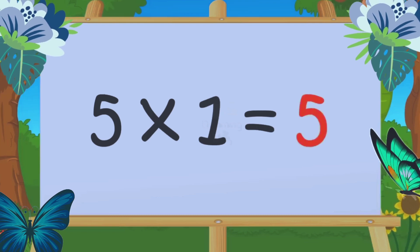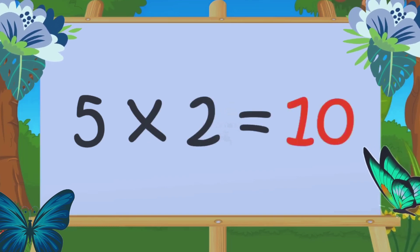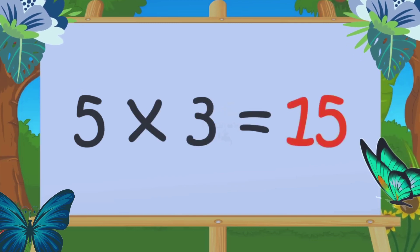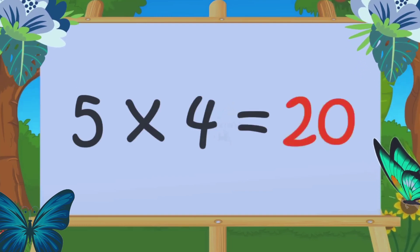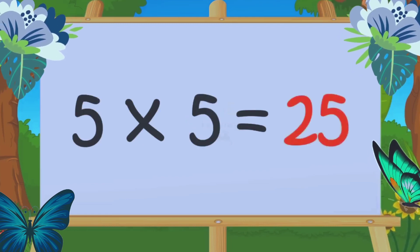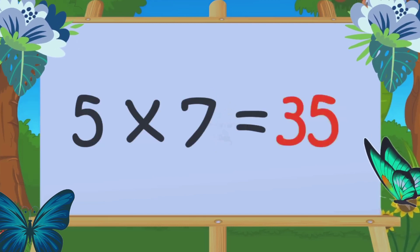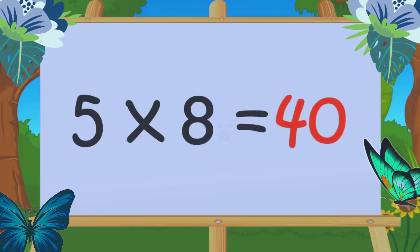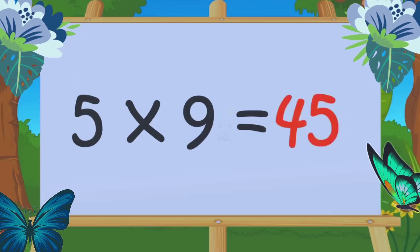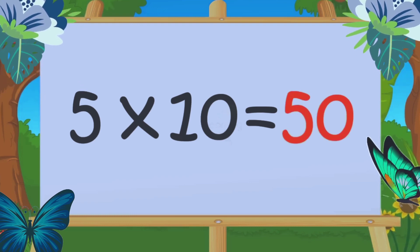Table of 5: 5 1s are 5, 5 2s are 10, 5 3s are 15, 5 4s are 20, 5 5s are 25, 5 6s are 30, 5 7s are 35, 5 8s are 40, 5 9s are 45, 5 10s are 50.